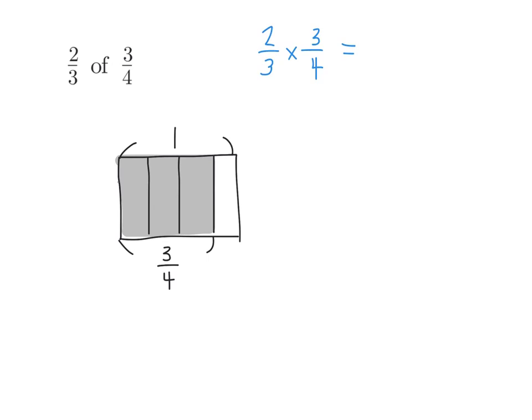Then we know we want to find 2/3 of those 3/4. So I'm going to split it up into thirds. And we want to show 2 of those thirds. I'm going to label it as such, 2/3. Now we can see that our entire rectangular fraction model has been divided up into 12 equal sections.